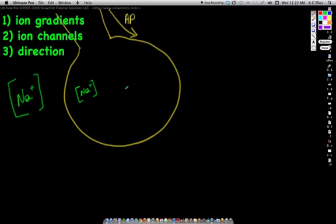For potassium, we see that the concentration gradient is much higher on the inside of any cell. Again, this doesn't matter what cell we're looking at compared to the outside.